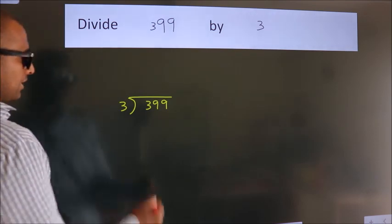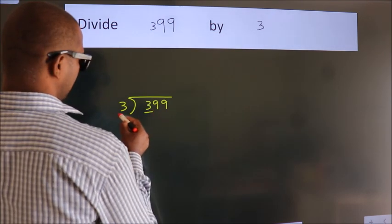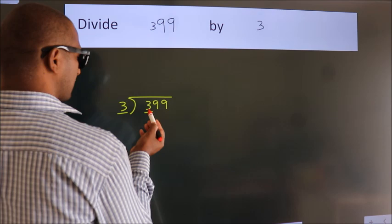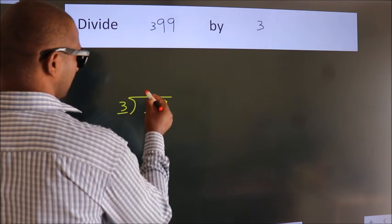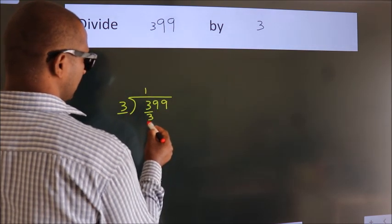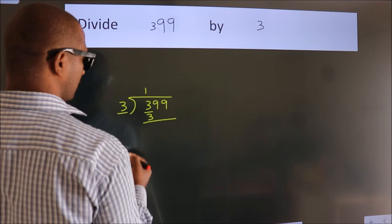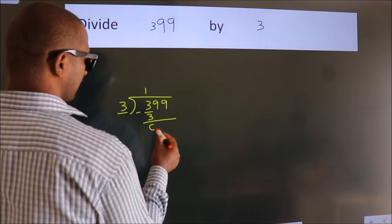Next. Here we have 3, here 3. When do we get 3? In 3 table, 3 1s 3. Now we should subtract. We get 0.